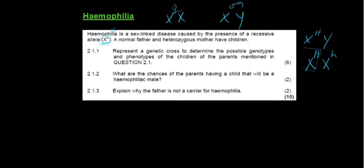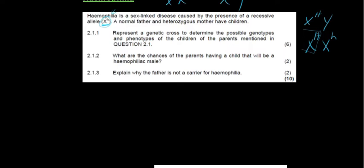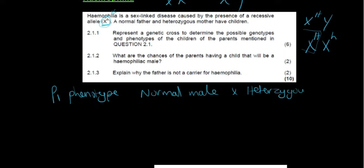Represent a genetic cross to determine the possible genotypes and phenotypes of the children of the parents mentioned in question 2.1. So let's quickly do this genetic cross. P1 phenotype, and you can just copy what they've said in the question, so normal male crossing with a heterozygous female. Then the genotype, we've already written that down for ourselves at the top.